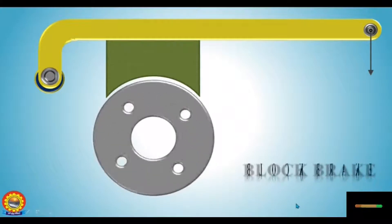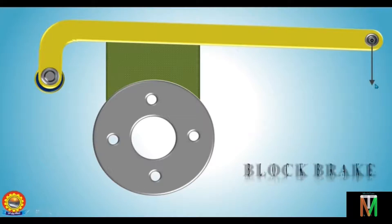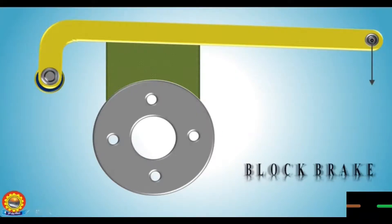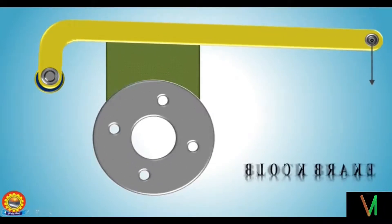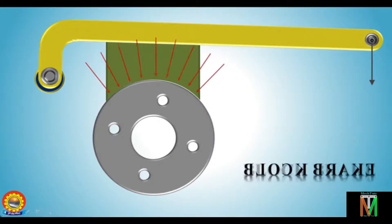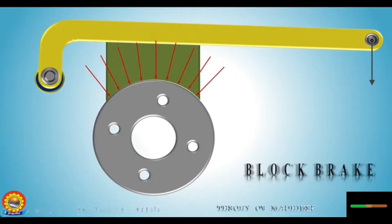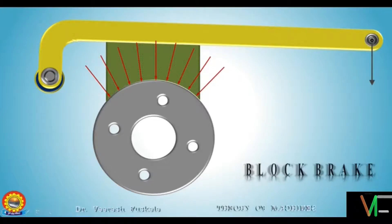This is the single block brake and this is how the lever is pressed from the free end. This is how the block brake works. This is the direction of the pressure or the force that has been applied by the shoe. So it is classified as a radial brake.